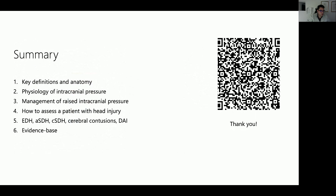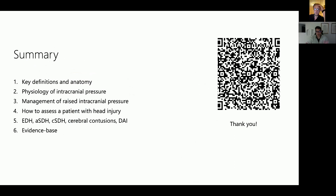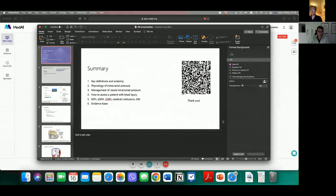That concludes the presentation in just under an hour. We covered key definitions, anatomical concepts, the physiology and management of ICP, how to systematically assess patients with head injury and prevent secondary brain injury, and five cases: extradural hematoma, acute subdural hematoma, chronic subdural hematoma, cerebral contusion, and diffuse axonal injury, along with the relevant evidence base.